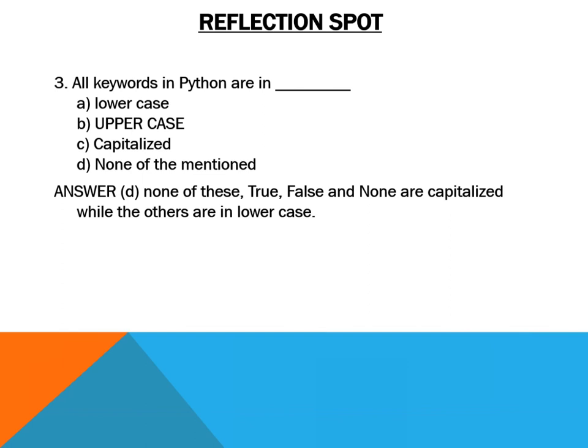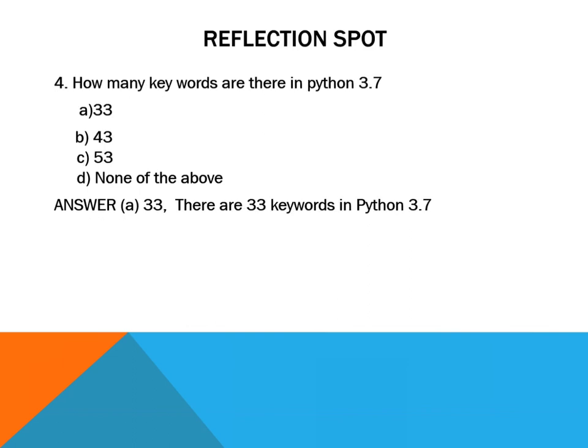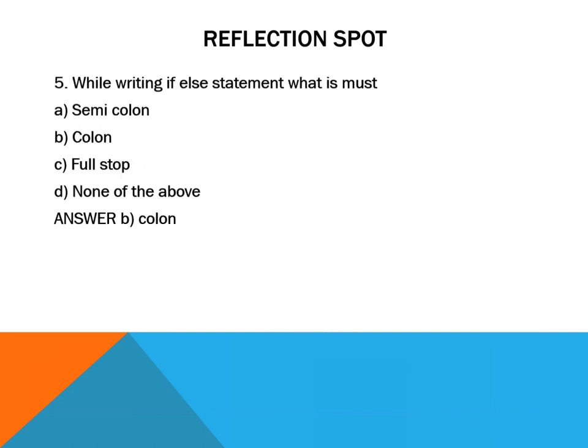Third question: all keywords in Python are in — lowercase, uppercase, capitalized, or none of the mentioned? The answer is none of the above, because True, False and None are capitalized while the others are in lowercase. Fourth question: how many keywords are there in Python 3.7 — 33, 43, 53, or none of the above? The answer is 33; there are 33 keywords in Python 3.7.